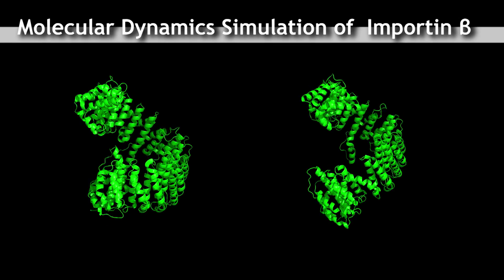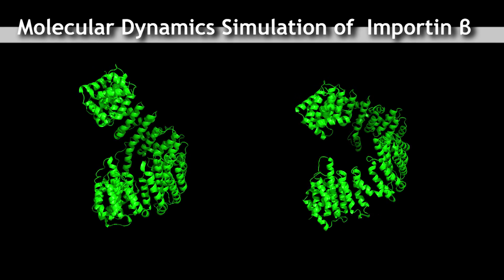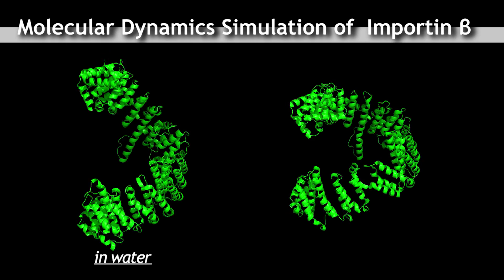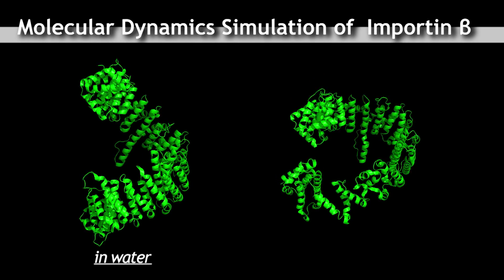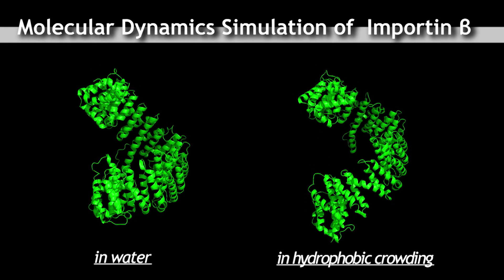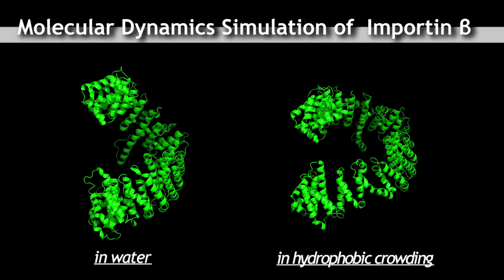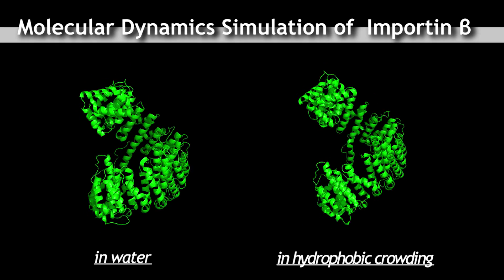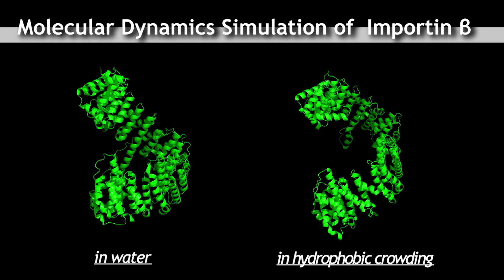Now you are looking at two different conformations of importin beta. One is in water, which represents the cytoplasm, and the other is in molecular crowding, which represents the nuclear pore. You can see the structure of importin beta is fluctuating all the time, but only in the crowding it is being stretched.